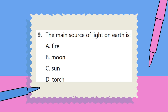Question 9. The main source of light on earth is: A. Fire. B. Moon. C. Sun. D. Torch.